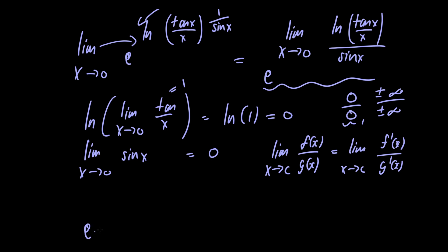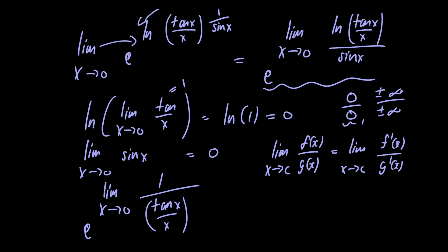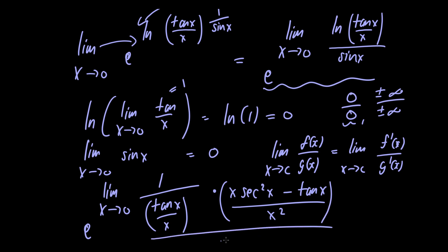So we have e raised to the limit as x approaches 0. To take the derivative of the numerator we use the chain rule: the derivative of the natural logarithm is 1 over its argument, so we have 1 over tangent of x divided by x. Then to take the derivative of the inside part we use the quotient rule, giving us x multiplied by secant squared of x minus tangent of x, divided by x squared. In the denominator we just have cosine of x.